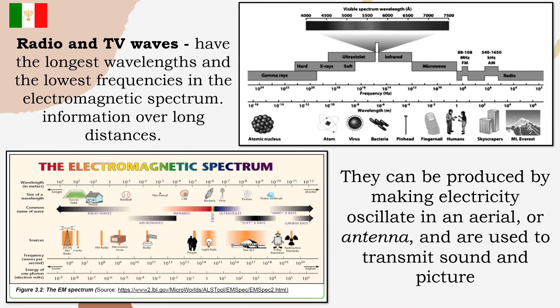Radio and TV waves have the longest wavelengths and the lowest frequencies in the electromagnetic spectrum. They can be produced by making electricity oscillate in an aerial or antenna, and are used to transmit sound and picture. Radio waves do more than just bringing music to your radio. They also carry signals for your televisions or cellular phones. The antennae on your television set receive the signal in the form of electromagnetic waves, and that is broadcasted from the television station. It is displayed on your television screen.